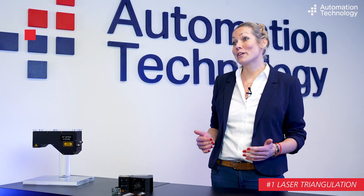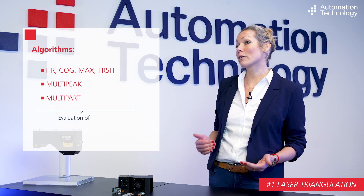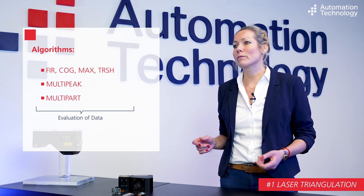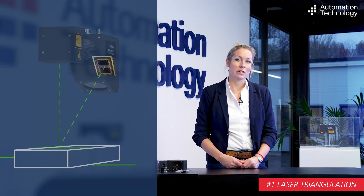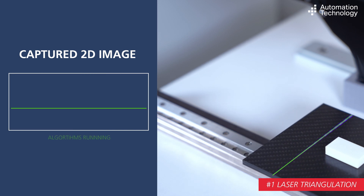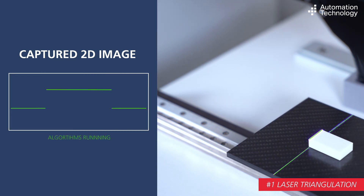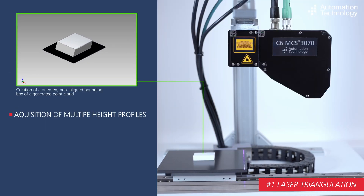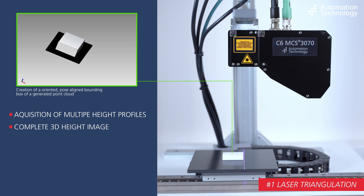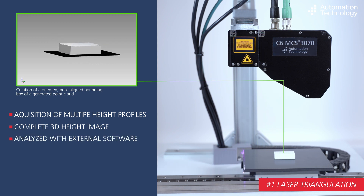The resulting sensor image is evaluated by the embedded processor using a variety of algorithms, which we will present to you in another video. With the help of these algorithms, the sensor image is converted into a single height profile. By moving the target under the laser line at a certain speed, multiple height profiles can be acquired. The complete height image containing a certain number of height profiles is output from the sensor and can be analyzed with the help of external software.